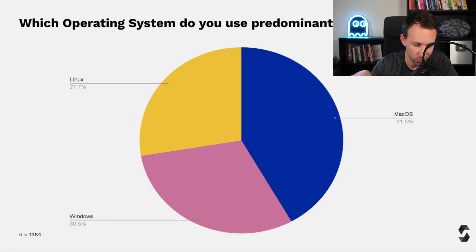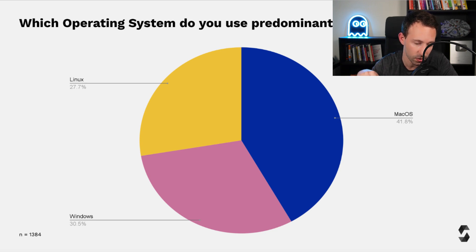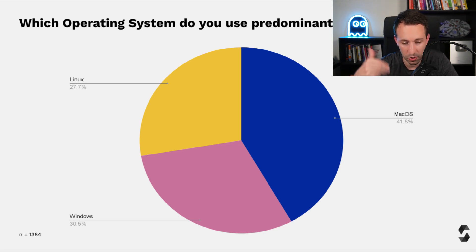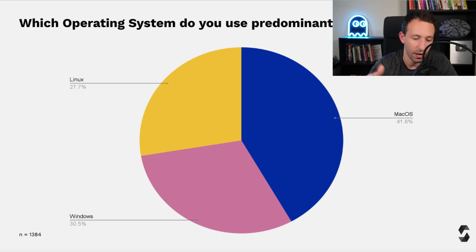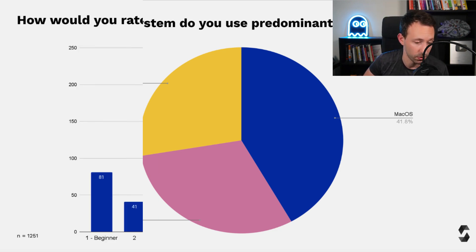Which operating system do you use? It's fairly well balanced, with the majority using macOS but a good chunk using Linux and Windows. If you can afford a Mac I would recommend it because you get Linux compatibility but with a better user experience. Windows used to be really annoying for web development but has improved a lot the past few years.